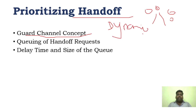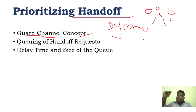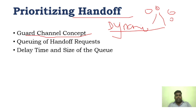We are following on-demand channel allocation — if there is a call request, then we check the channel. The Guard Channel Concept uses a minimum number of channels reserved for handoff, and it can be implemented as a dynamic channel strategy.